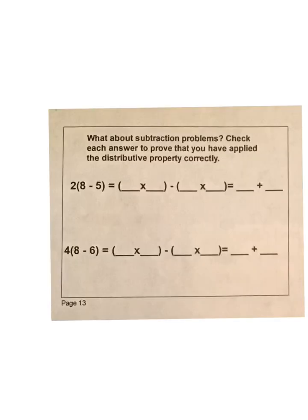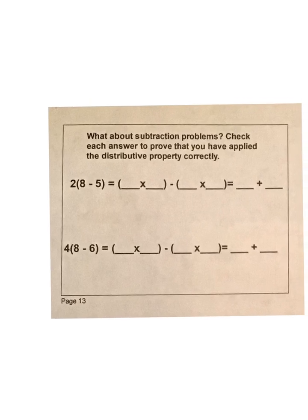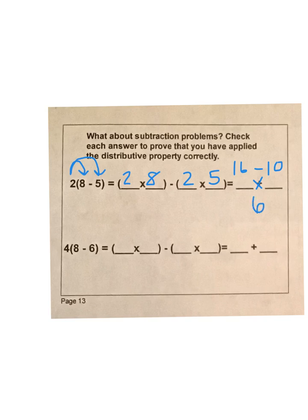Now for subtraction problems, we follow the same method. So we'll distribute 2 to 8, and then 2 times 5. So 2 times 8, 2 times 5. The difference is going to be that our final answer will have a subtraction sign. So we have 2 times 8 is 16, minus 2 times 5 is 10. And then 16 minus 10 gives us 6.